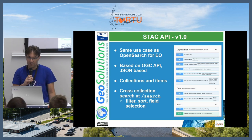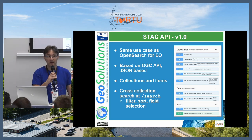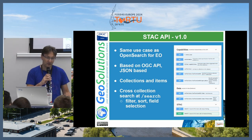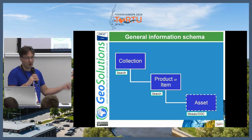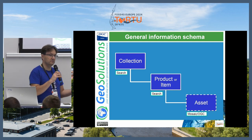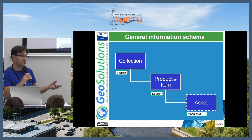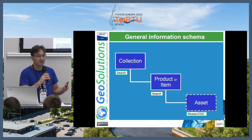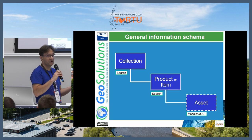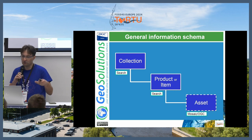STAC stands for Spatial Temporal Asset Catalog. It's a RESTful API, actually compatible with OGC API features, which collects all your products and organizes them in collections. The idea is that you have a collection — a uniform set of satellite data products — with items inside, and each item has a bunch of files called assets. Take the classic Sentinel-2 dataset: it's a set of 13 files, one per band, plus metadata files. Each one of them would be an asset.